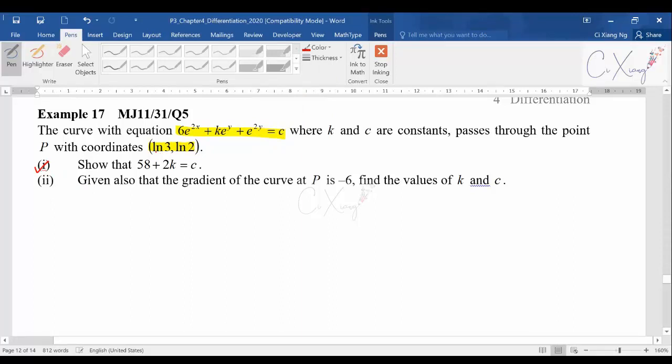Since they give you the x and y coordinates and the curve passes through the point, I can substitute ln 3 and ln 2 into the equation. Originally I'm having 6e^(2x) + ke^y + e^(2y) = c. Substituting x = ln 3 and y = ln 2, I get 6e^(2ln3) + ke^(ln2) + e^(2ln2) = c.